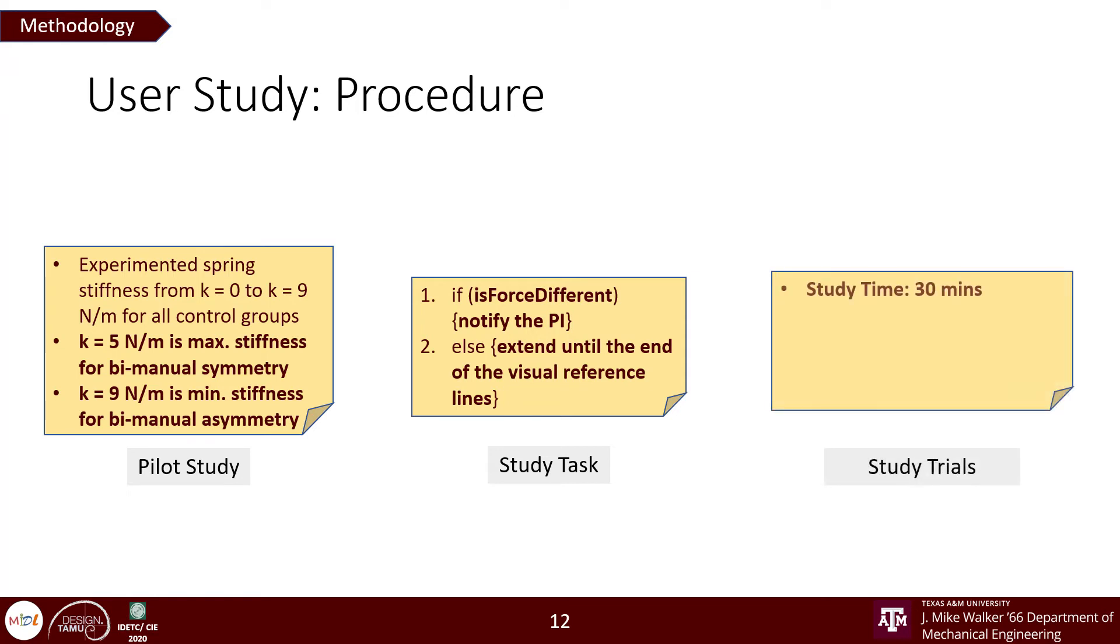Each study took about 30 minutes and began with a preliminary questionnaire focusing on the participants being healthy, which means that their hands didn't have any sort of physical impairment. Each trial took about 3 to 4 seconds and were randomized. The study was concluded by open-ended interview questions to gauge user feedback.